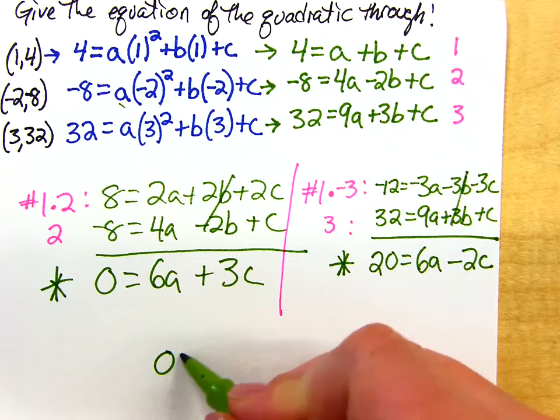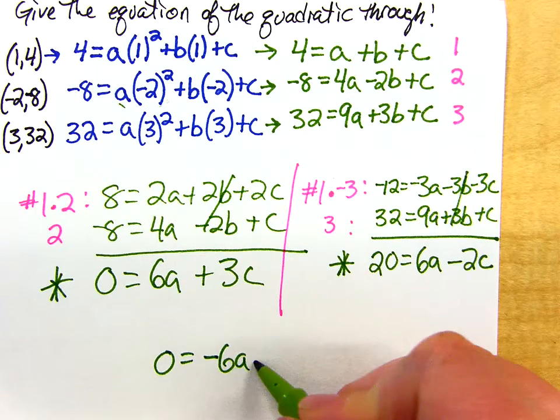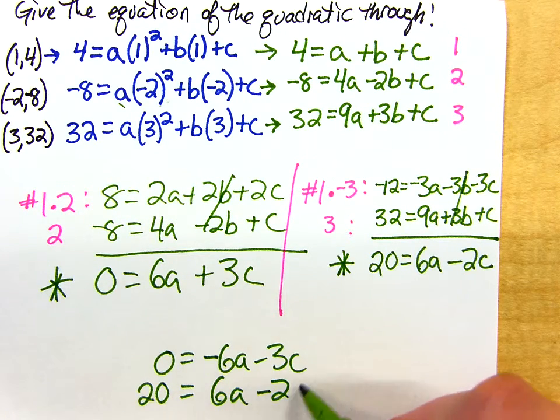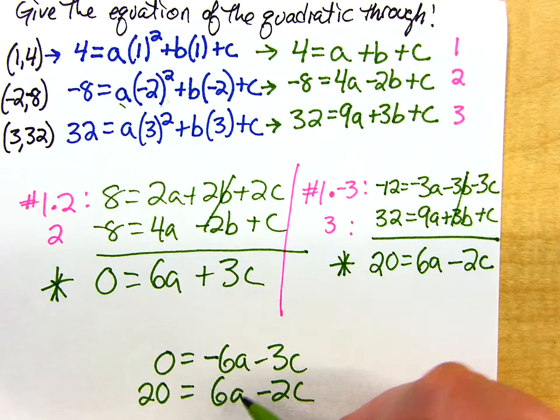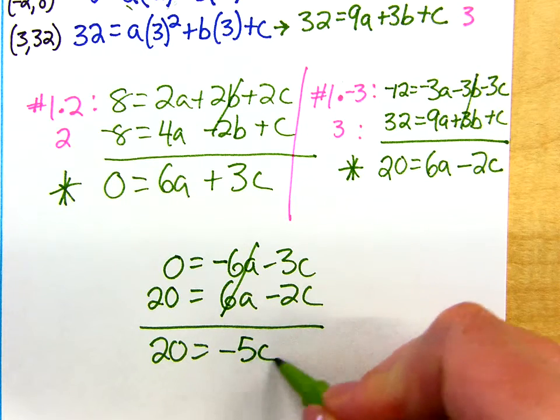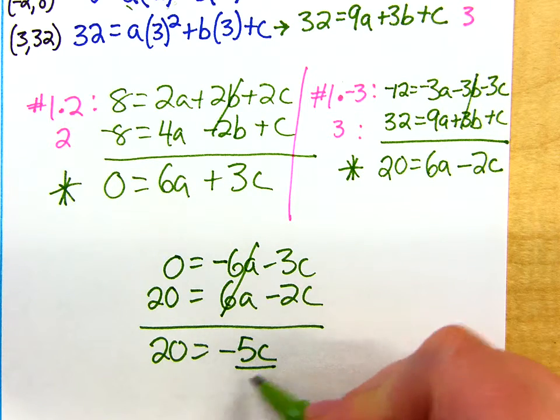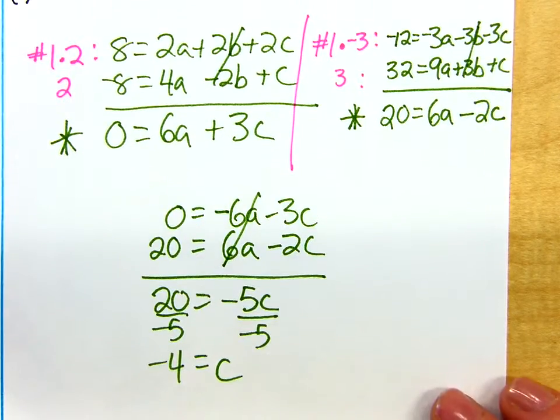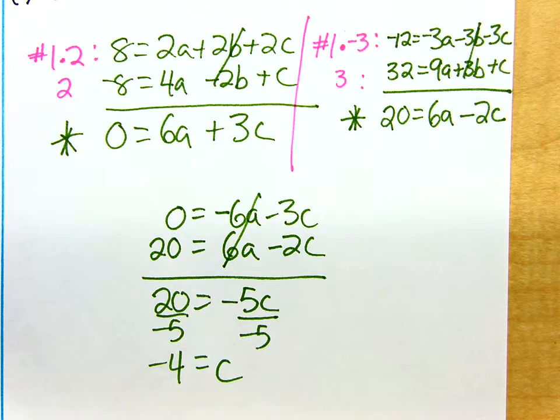So 0 times negative 1, that doesn't change. But now I have a minus 6a, minus 3c, and I'll join that with this one over here. So a's are gone. I got a minus 5c. So now I know what c is. I have one third of the answers that I was looking for, and I'm really close to getting the next one. I now know one of my three variables. I needed a, b, and c. I already have c. How do I find the next one?